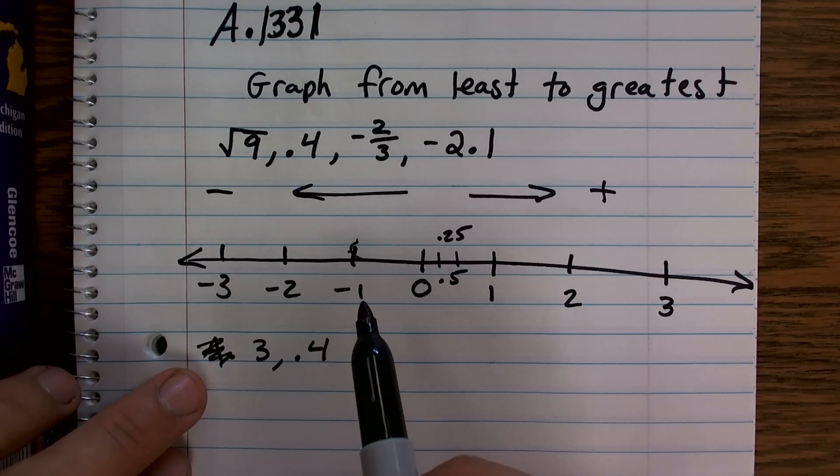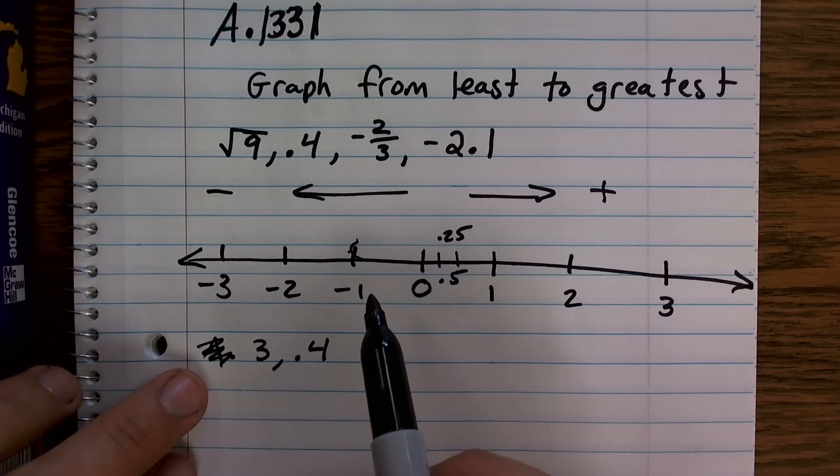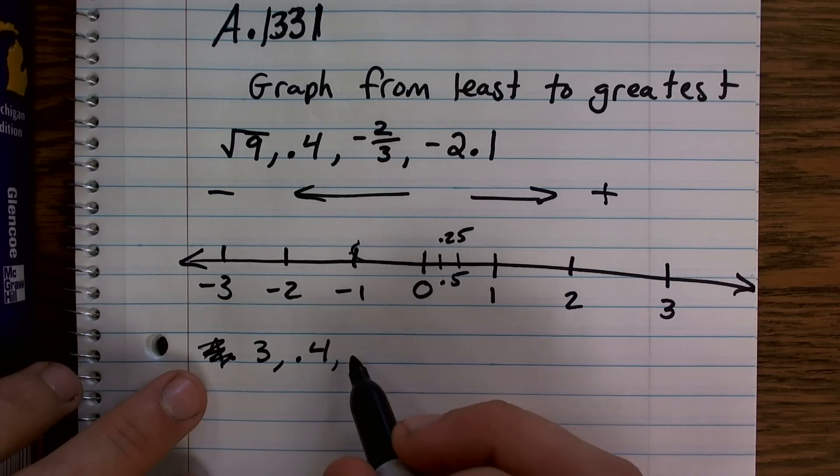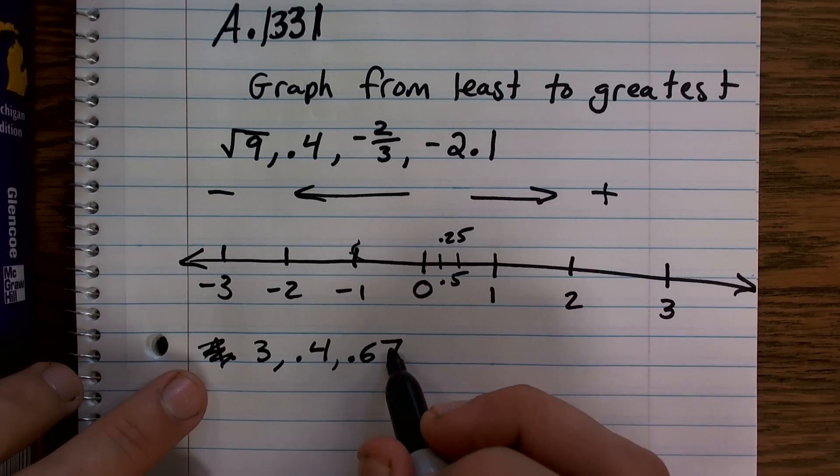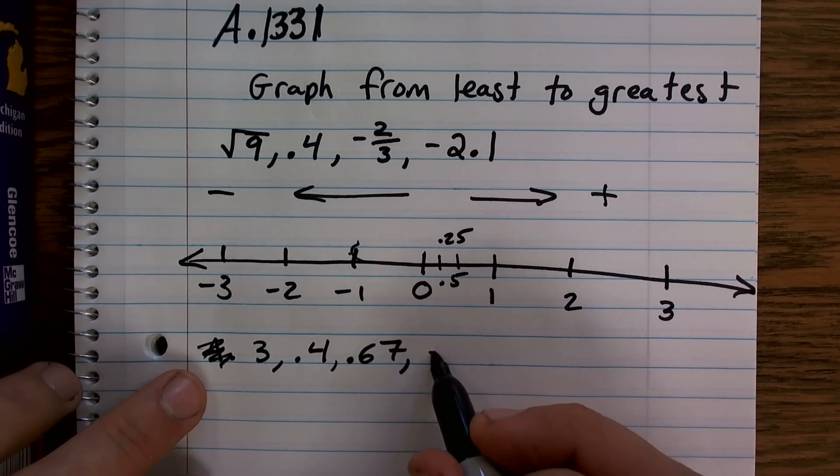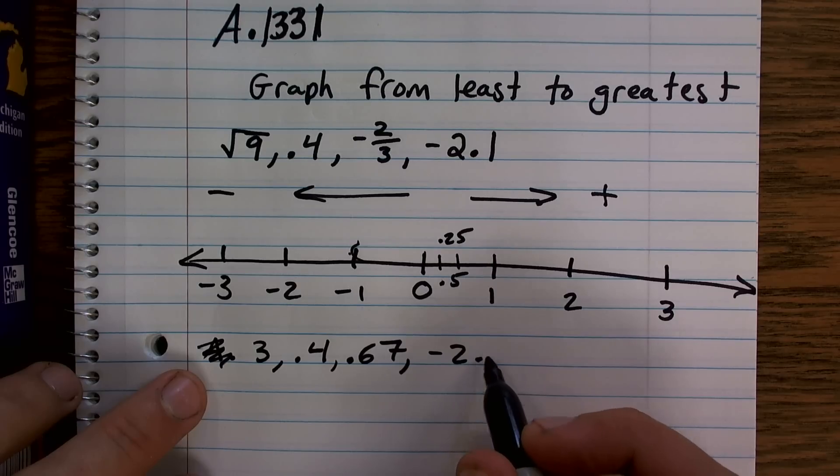Well, when you look in your calculator, you notice that it goes 0.666 on repeating. So I'm just going to round it up to an approximate 0.67. Then we have negative 2.1.